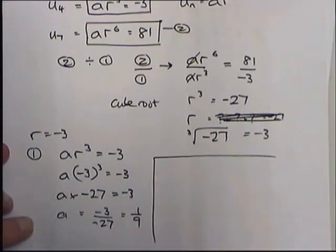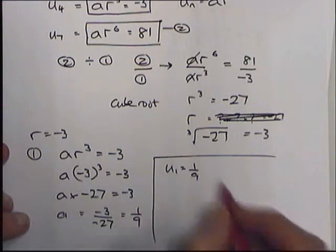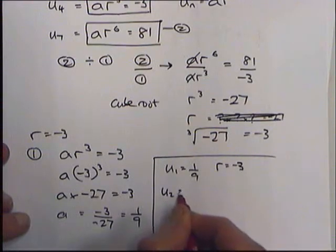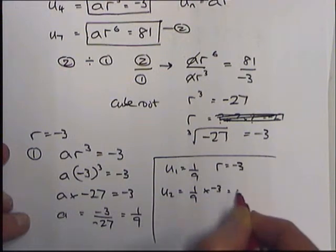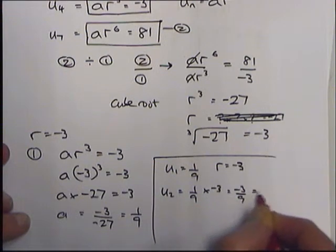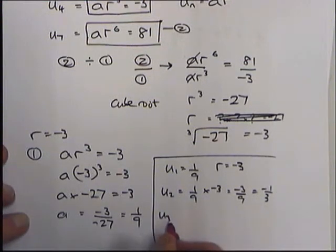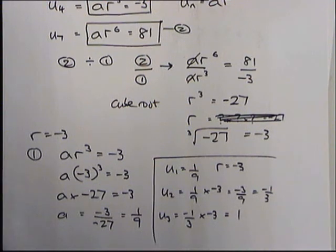My first term is 1 ninth and R is minus 3. My second term is the first term times R: 1 ninth times minus 3 equals minus 3 ninths, which simplifies to minus 1 third. The next term is minus 1 third times minus 3, which gives 1. So I've now worked out the first three terms: 1 ninth, minus 1 third, and 1.